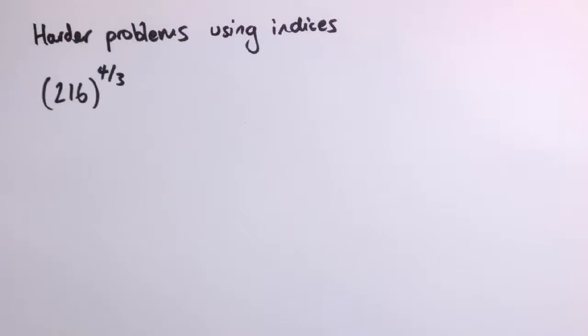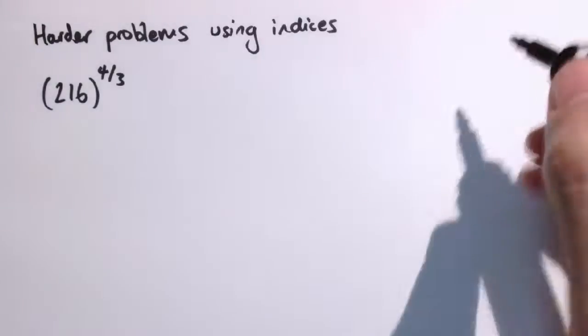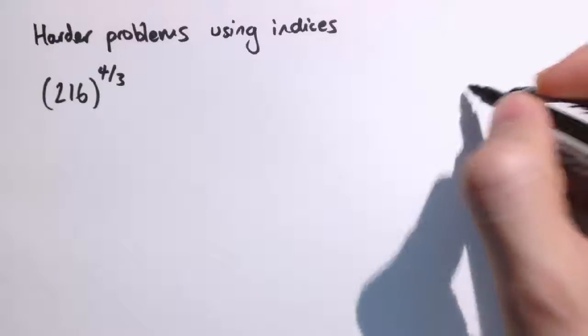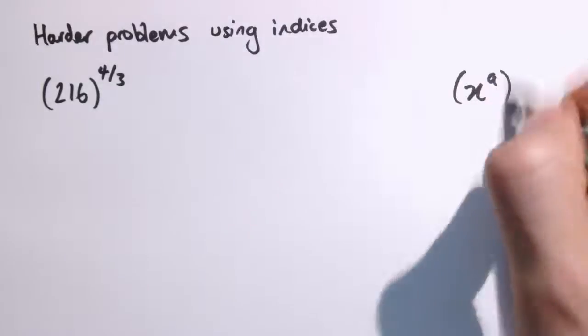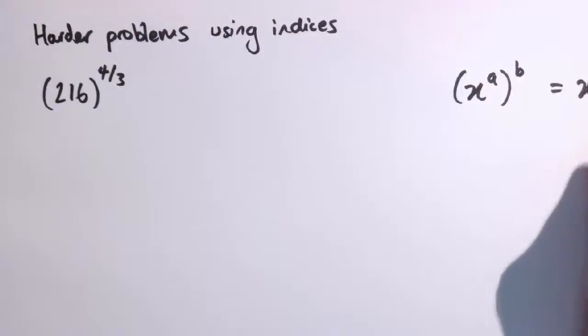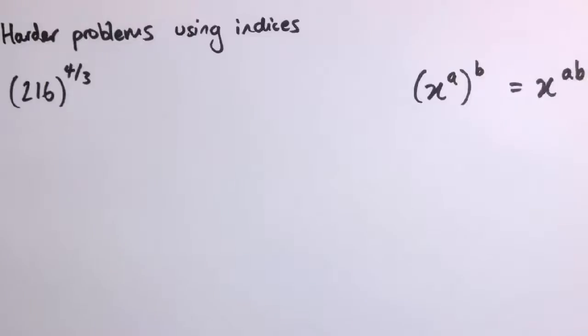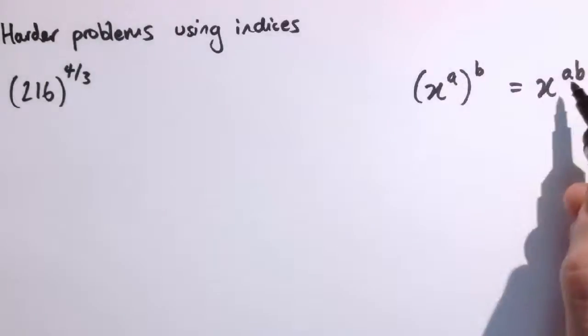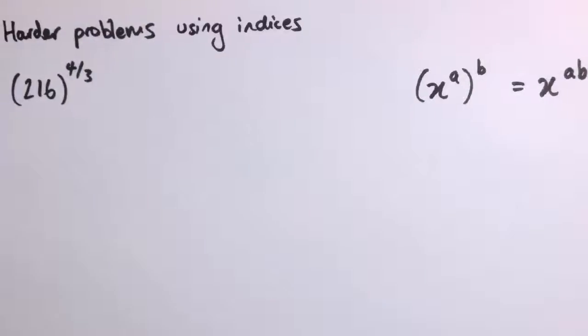I'm just going to look at a few trickier examples about using indices, and the main rule we're going to use in this video is the rule that if we have x to the a all to the b, that's x to the a times b, and we're going to kind of use that in reverse by taking something which is in this form and putting it in this form so we can simplify something down.